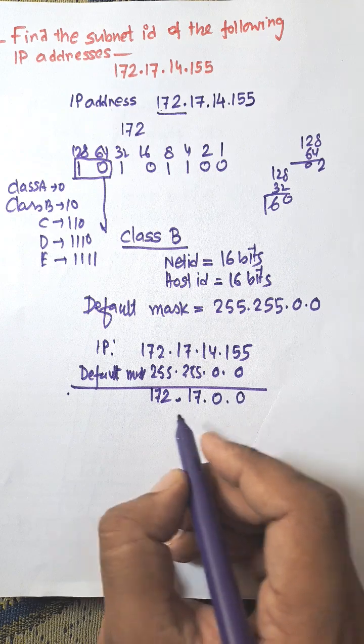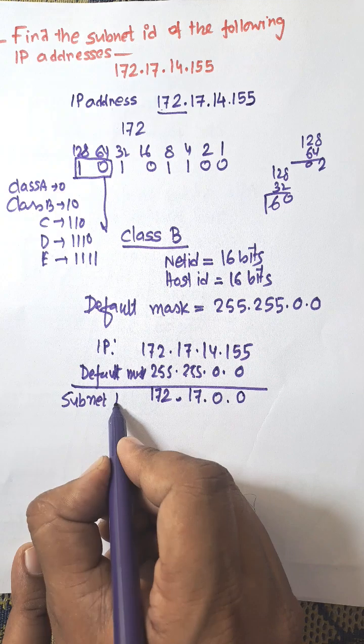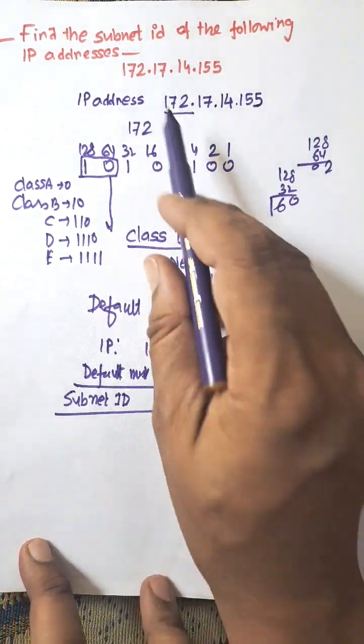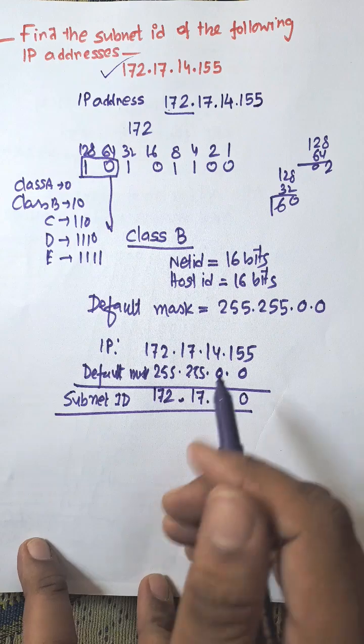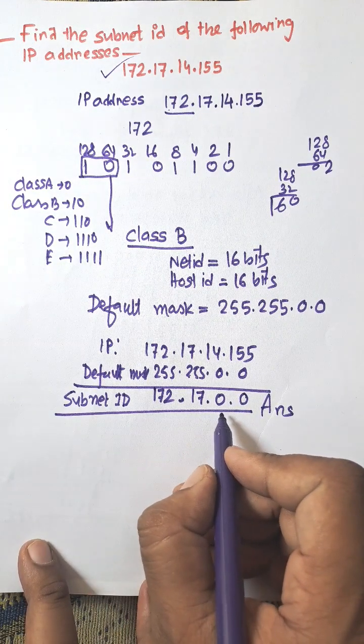So this is known as subnet ID or subnet IP address of the network that belong to the IP address 172.17.14.155. So answer is 172.17.0.0.